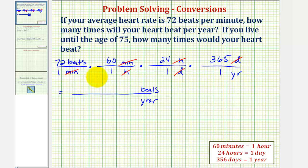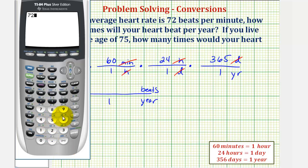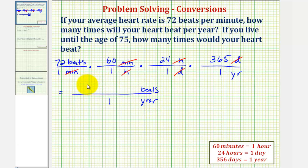Notice how on multiplying the denominators, we just have one, and now we'll use the calculator to find the product of the numerators. So we'd have 72 times 60 times 24 times 365. So we have 37,843,200 beats per year.